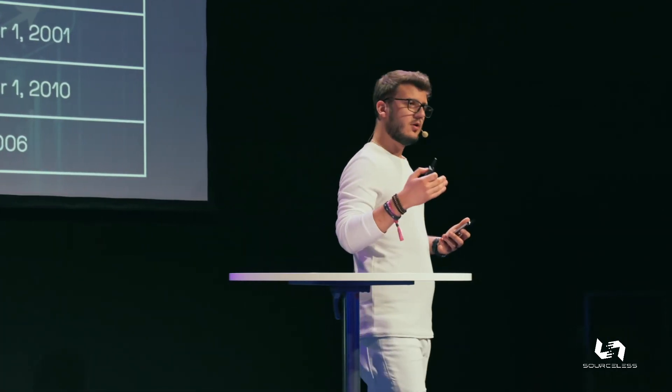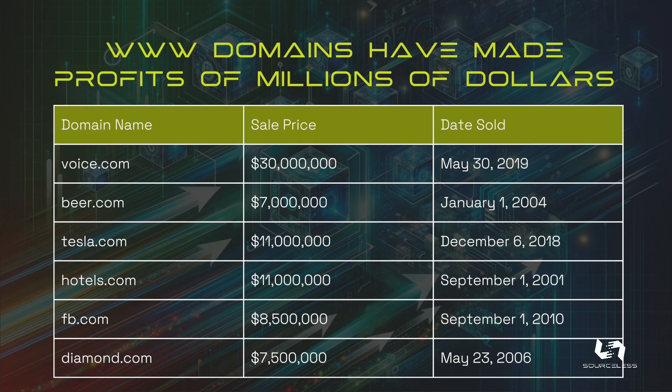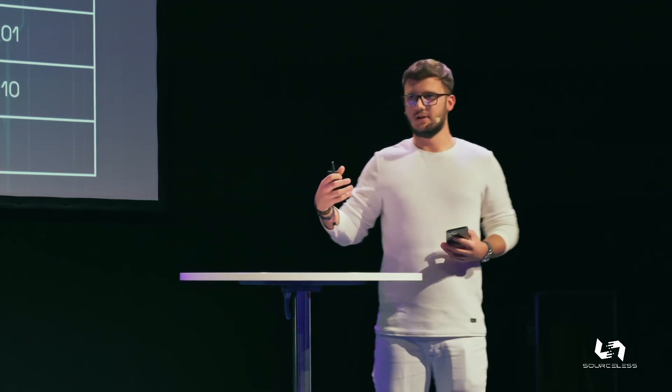Everybody wants to make money, and in Web3 you have similar opportunities to Web2 — but Web3 is like Web2 on steroids. In Web2, domains sold for massive sums: voice.com for 30 million dollars in 2019, beer.com for 7 million dollars in 2004, and Facebook for 8.5 million dollars in 2010. Those big companies and giants that will migrate from Web2 to Web3 need a seamless transition — just like a phone: I don't know how semiconductors work, but I know it's useful and it puts food on the table. That seamless transition is achieved through digital identity and the power of blockchain.